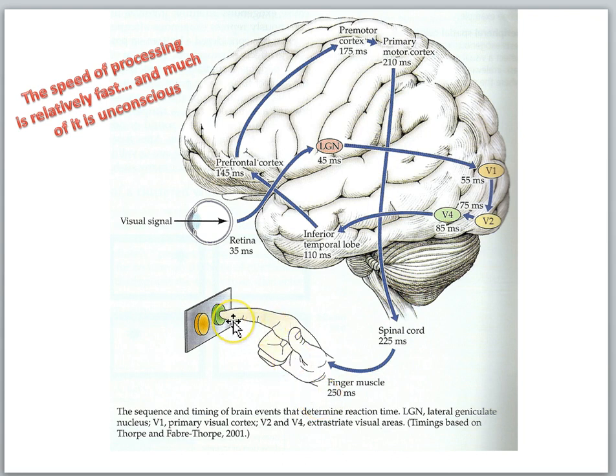So in a quarter of a second from the time the image flashes on the screen to the time we push the button is a quarter of a second. But that involves information traveling along a pathway of neurons.